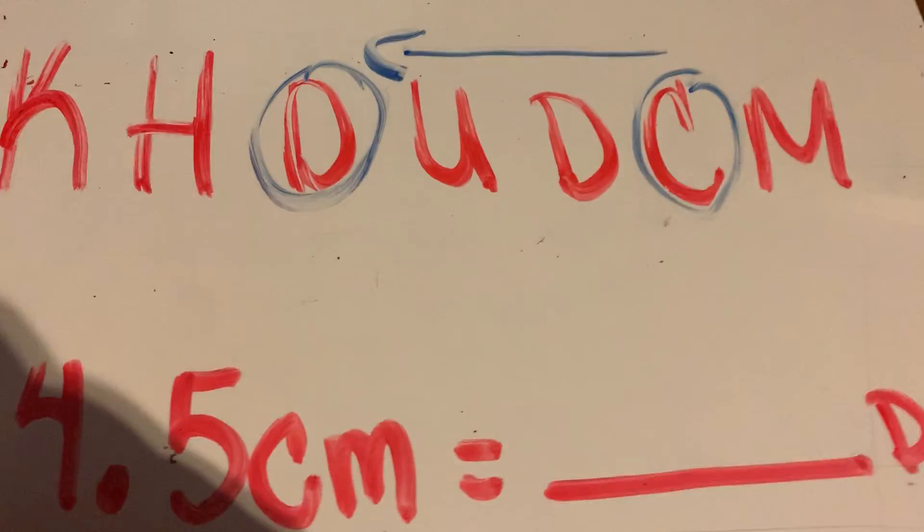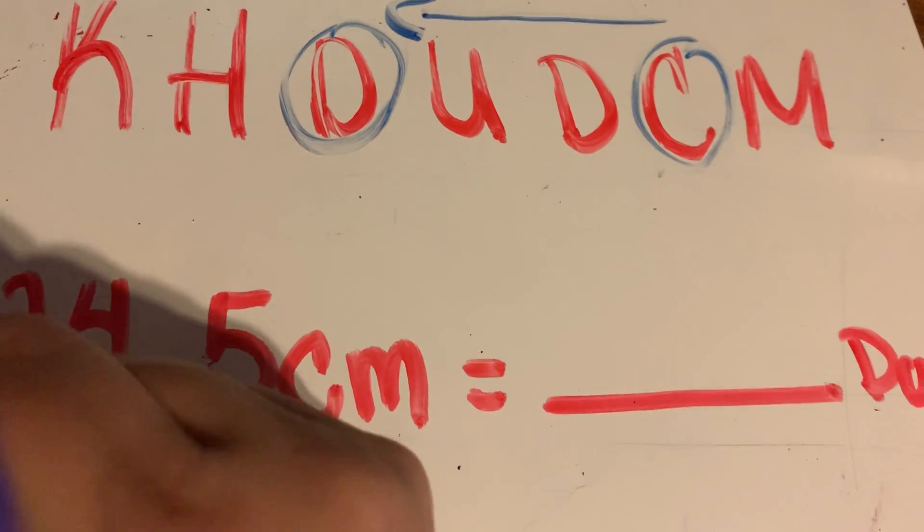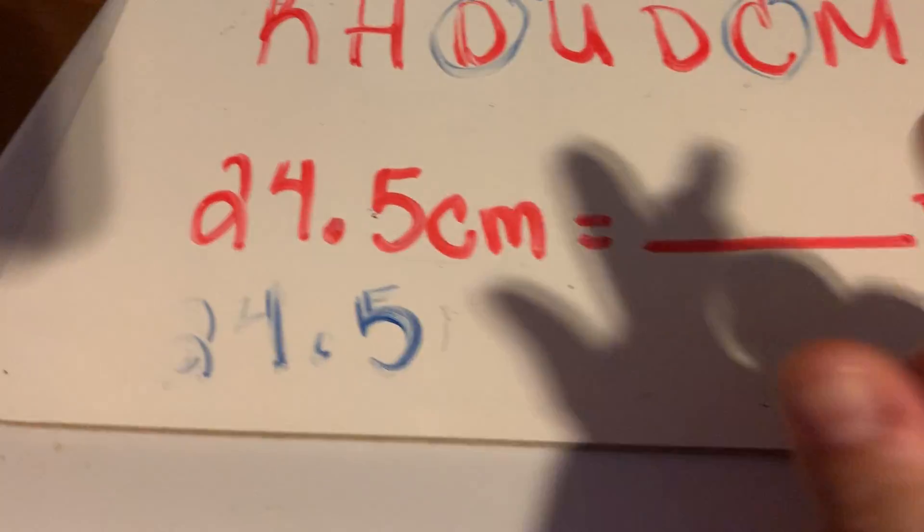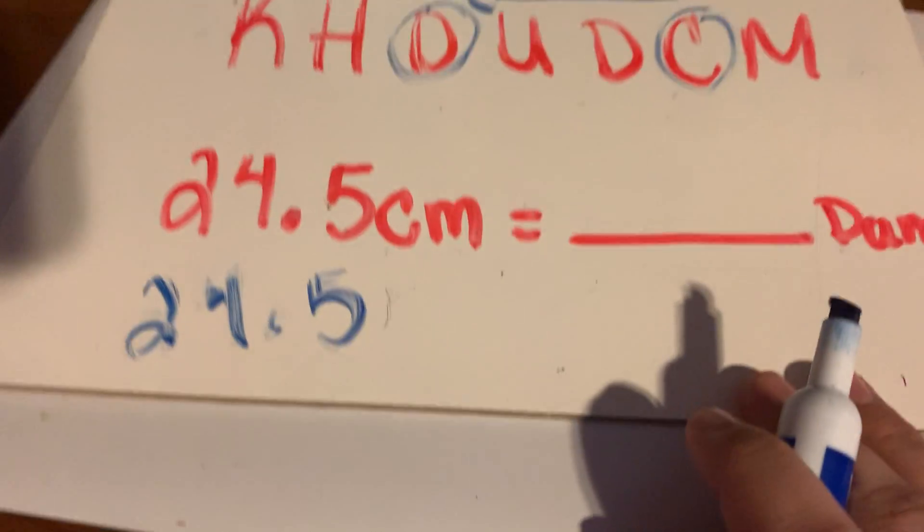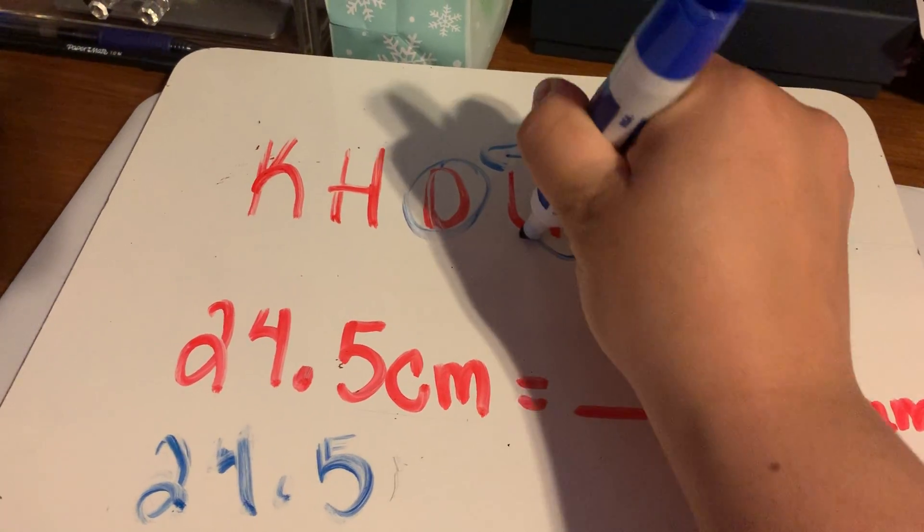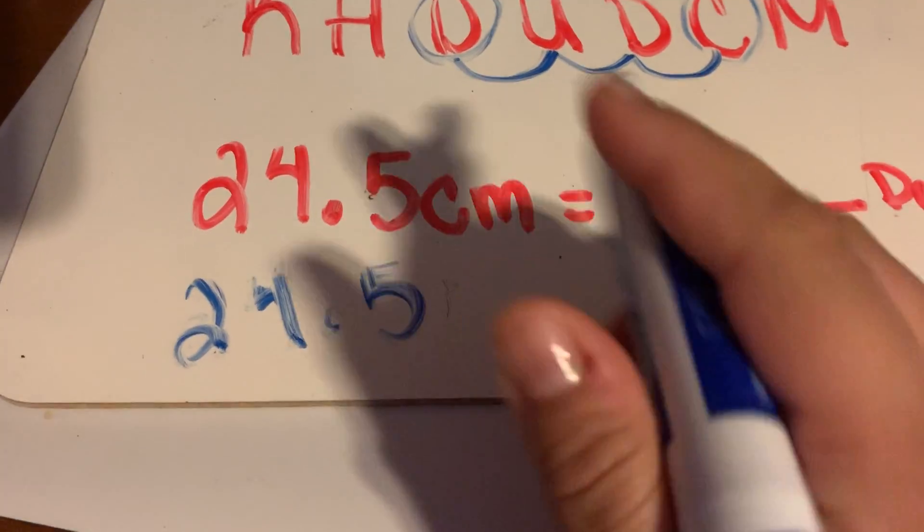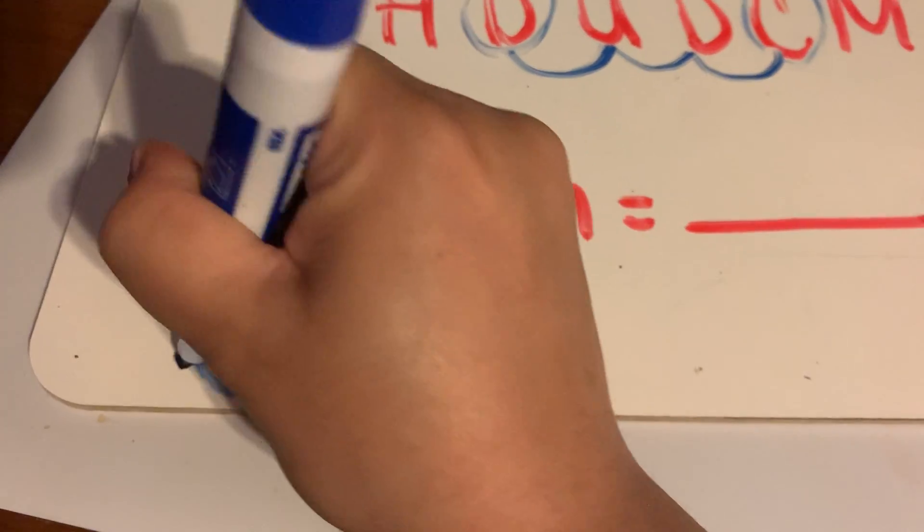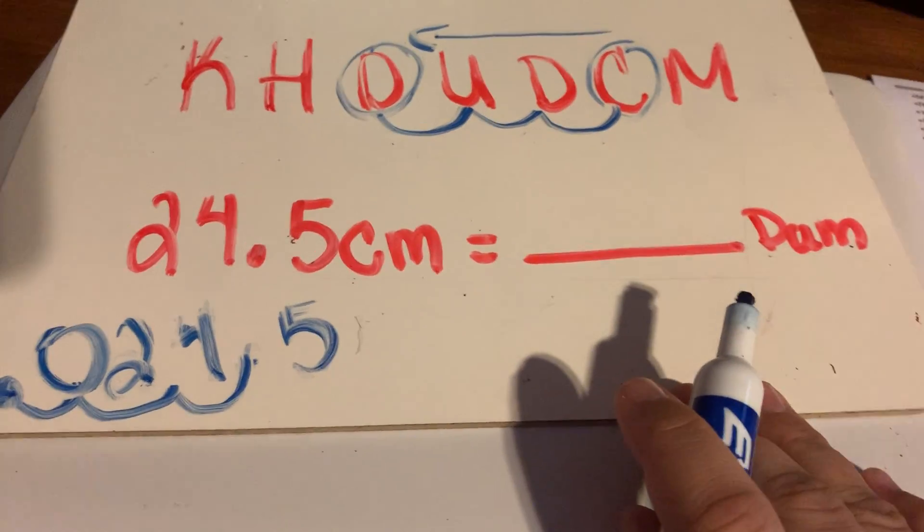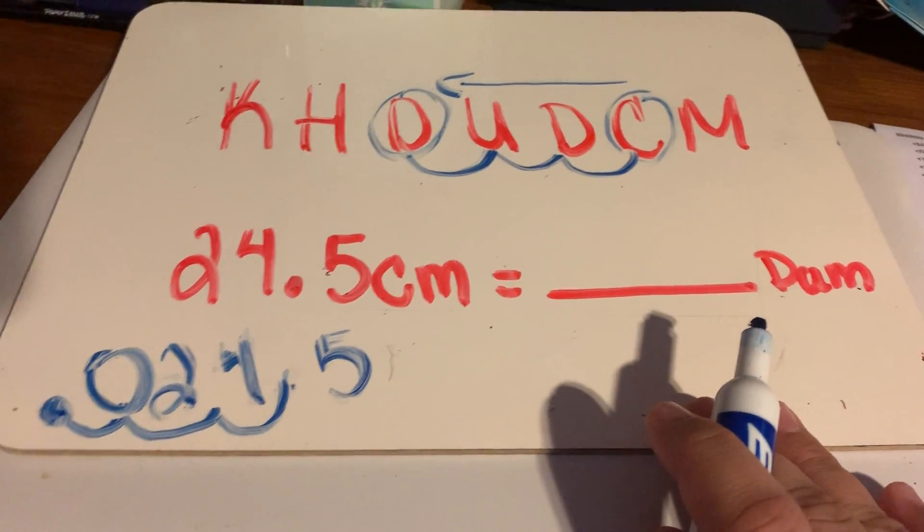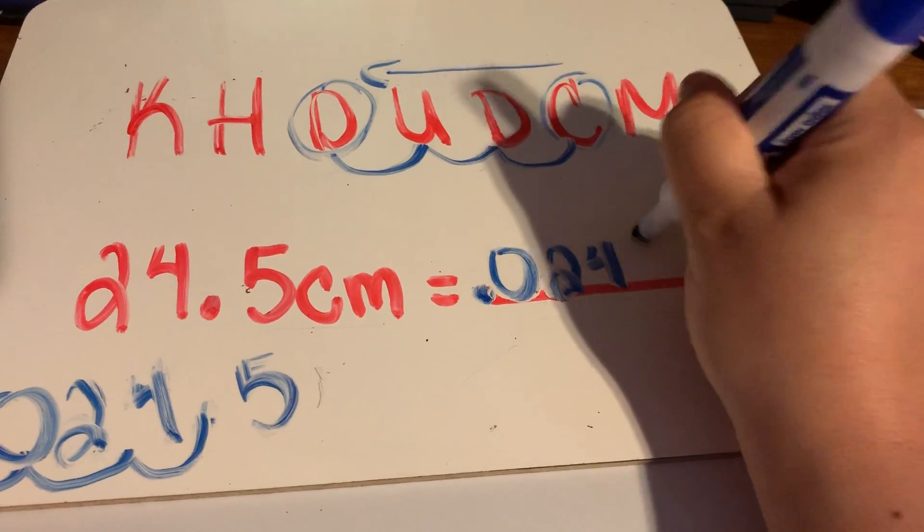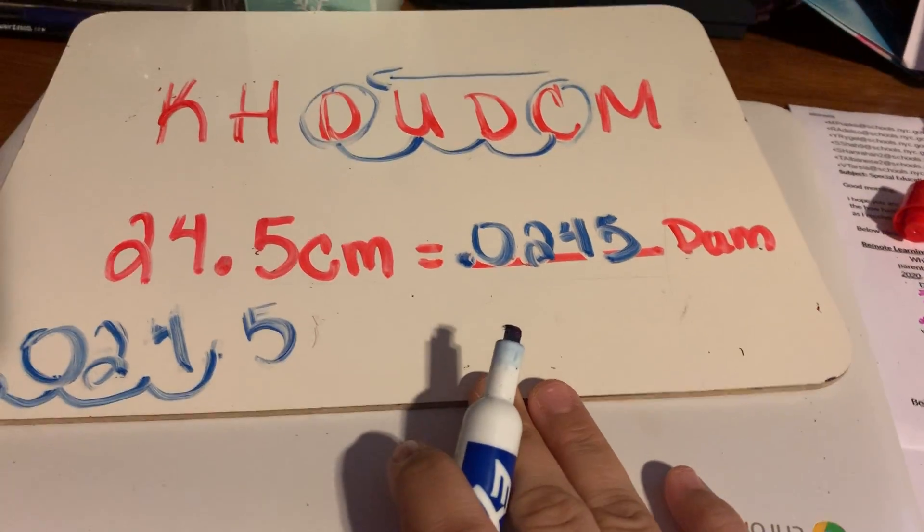So let's go down here. Let me rewrite this again. 24.5. Sorry if it's a little blurry. So how many places am I moving it to the left? Let's find out. One, two, three. So I'm going to move my decimal three places to the left. One, two, three. What am I going to put here? My secret ninja. So how many decameters is it going to be? It's going to be 0.0245 decameters.